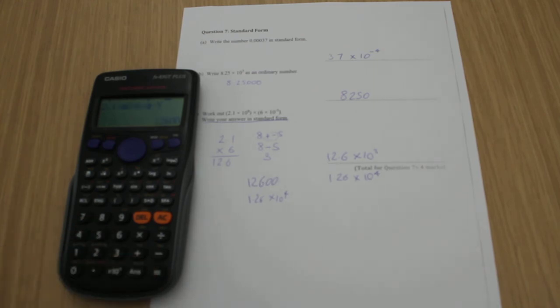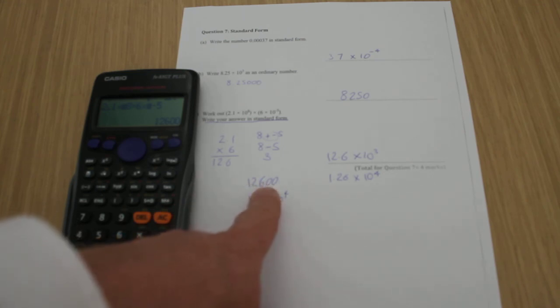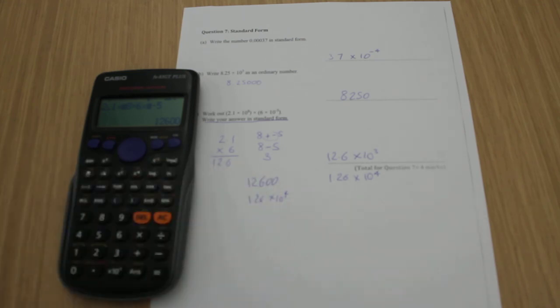So I get 12,600. So I could write my 12,600 down, and then turn that back into standard form again, using the method that I've shown you before.